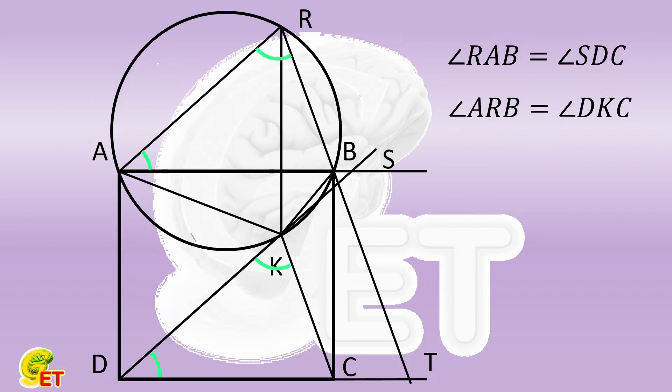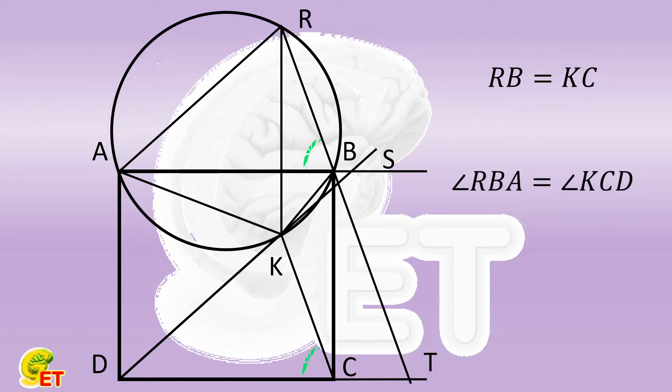Let's consider again the opposite sides of the rectangle, AB and DC, which are equal to each other. Therefore, triangles ARB and DKC are congruent. So the corresponding edges RB and KC are equal to each other, and angle RBA is equal to angle KCD.